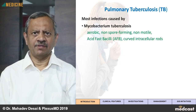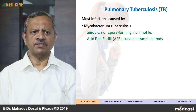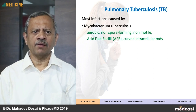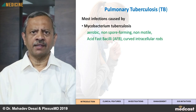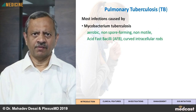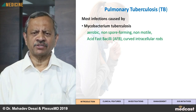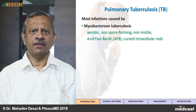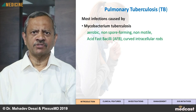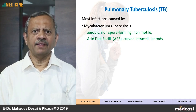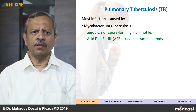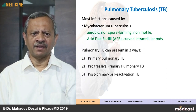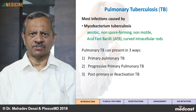Tuberculosis is caused by the bacteria called Mycobacterium tuberculosis. There are also other mycobacteria like M. bovis, which forms almost 10 percent of the patients of tuberculosis. The majority are Mycobacterium tuberculosis and they are aerobic, non-spore forming, non-motile, acid-fast bacilli. They are curved intracellular rods.